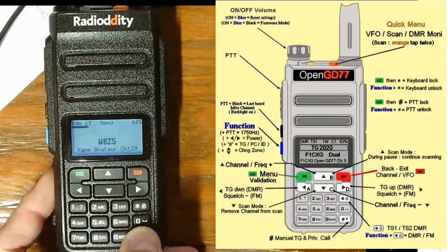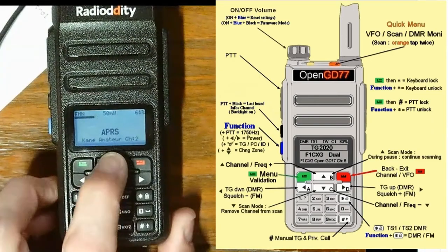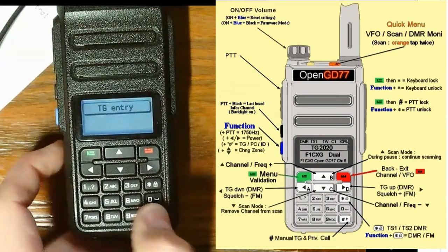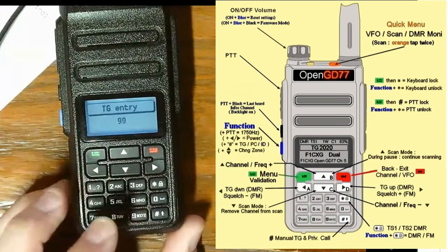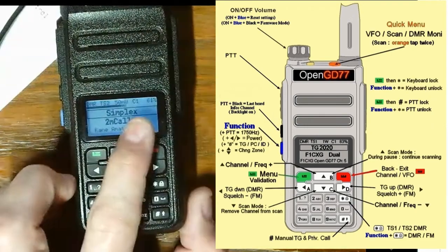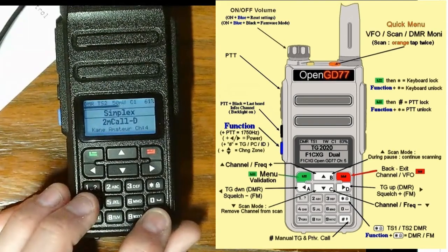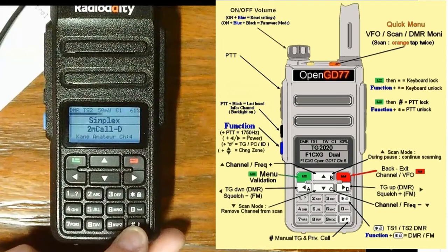manual talk group private mode. So, if I get into digital... I can enter my talk group specifically. So, if I wanted to go to talk group 99 or whatever, it would then go to talk group 99. Which is a nice option. Being able to just manually enter that by pressing pound.